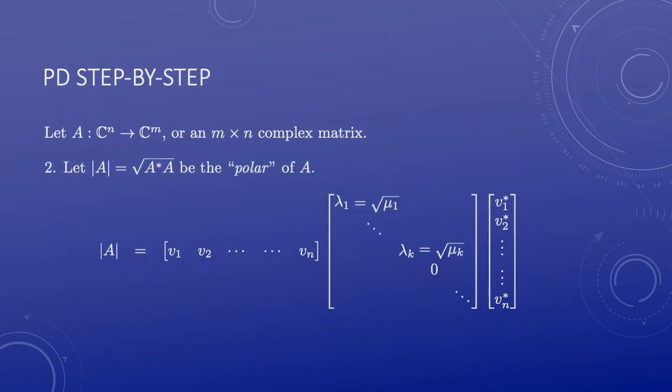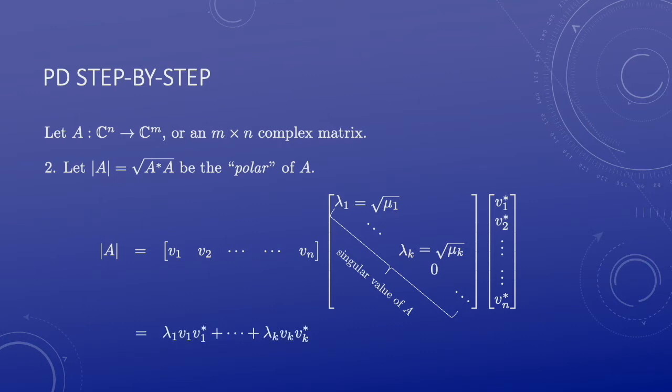Next, define the polar of A as the square root of A star A. This is done by taking the square roots of the non-zero eigenvalues of A star A. The diagonal entries lambda 1 up to lambda k, and the zeros, are the singular values of A. The polar of A has the spectral decomposition, written as a weighted sum of rank-1 projections as well.